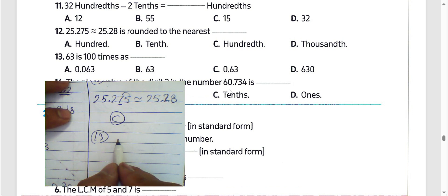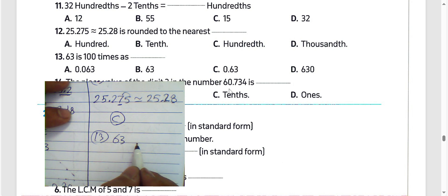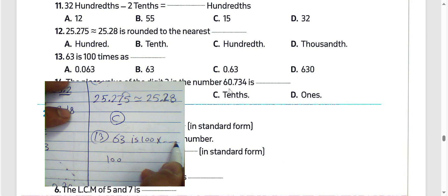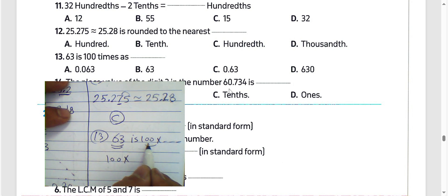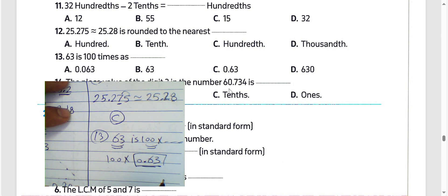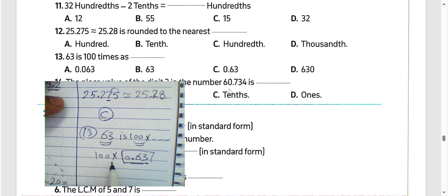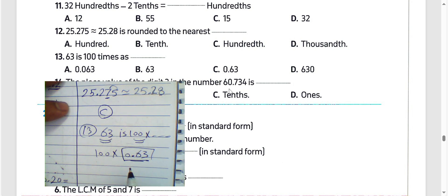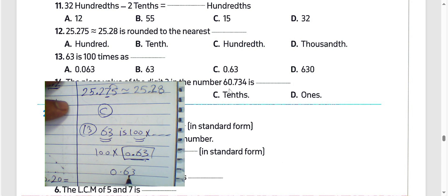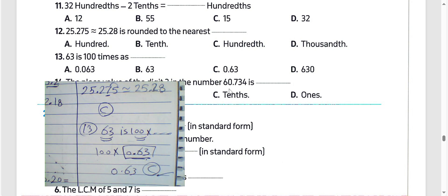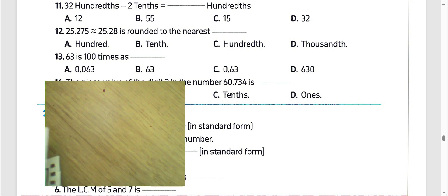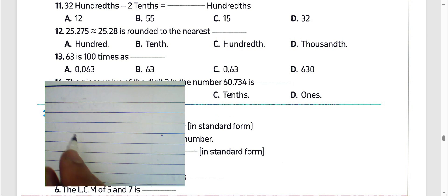Question number 13: 63 is 100 times as what? We know 63 divided by 100 equals 0.63. So 0.63 multiplied by 100 equals 63. Choose 0.63. The result is letter C.